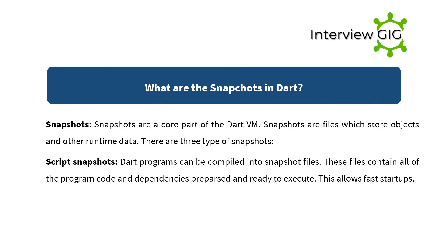What are snapshots in Dart? Snapshots are a core part of the Dart VM. Snapshots are files which store objects and other runtime data. There are three types of snapshots. Script snapshots: Dart programs can be compiled into snapshot files. These files contain all of the program code and dependencies, pre-parsed and ready to execute.